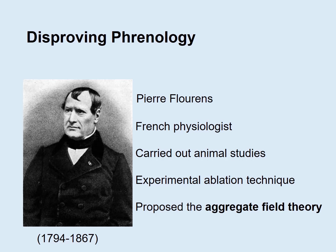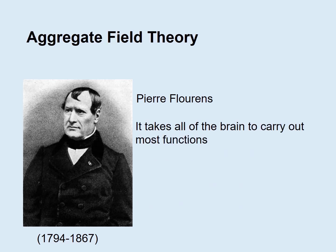His studies showed that once you take out various amounts of brain — sometimes even a lot — the animals, after they were sewn up, behaved normally. They would eat, they would drink, they would walk around. So he concluded that phrenology's claim of localization could not be true. His alternative was the aggregate field theory, in which he claimed that it takes all of the brain to carry out most animal functions.